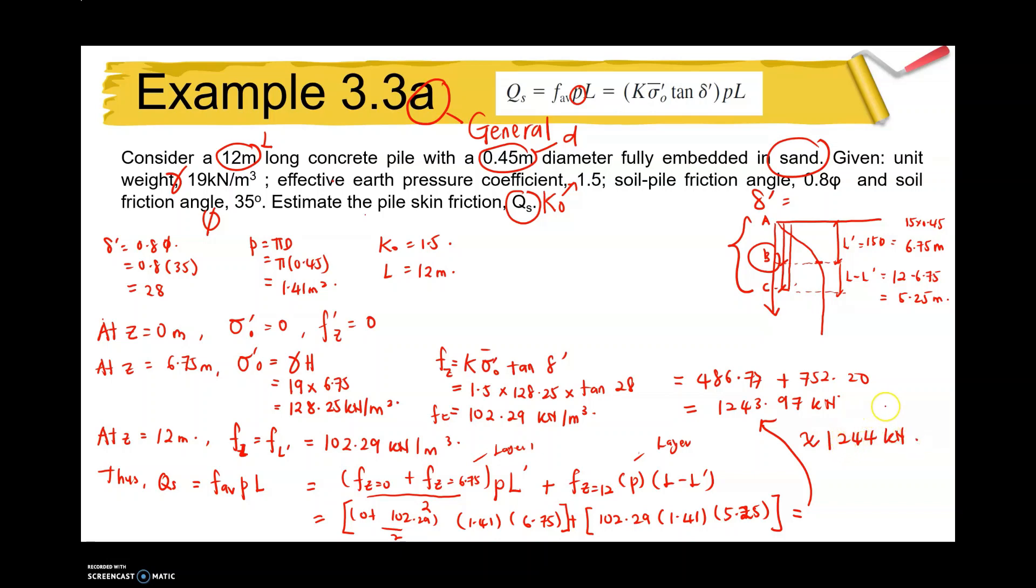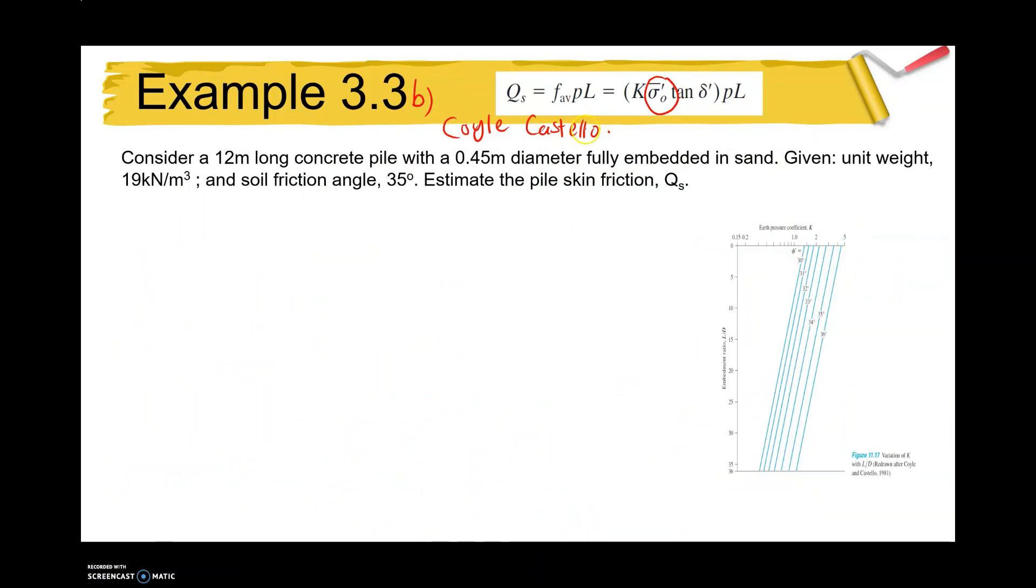This is the solution for general method in determining the shaft friction of pile. The next example is in calculating the Qs based on Coyle and Castello method or equation. The difference is in determining the F value, which is the K value can be determined using this graph, and also the sigma prime value is very simple calculations. We don't need to consider the L prime or the full L, and the delta we consider it as 0.8 phi, as mentioned in the previous slide.